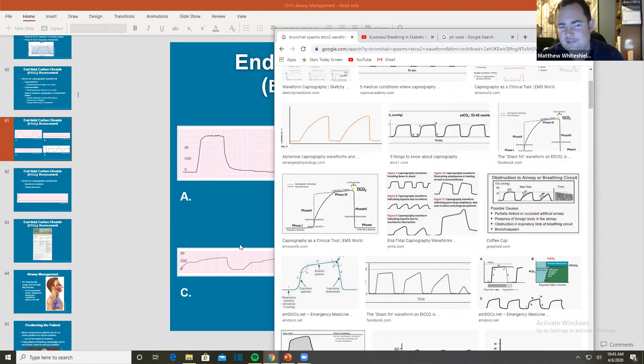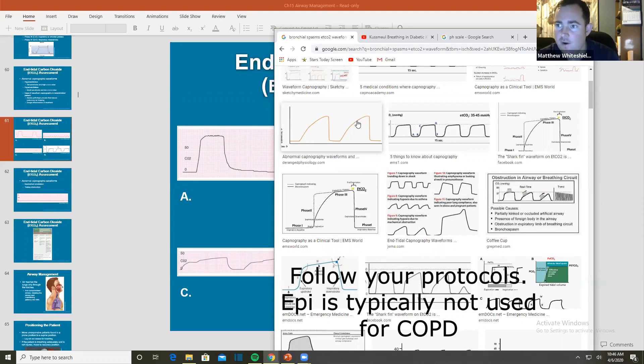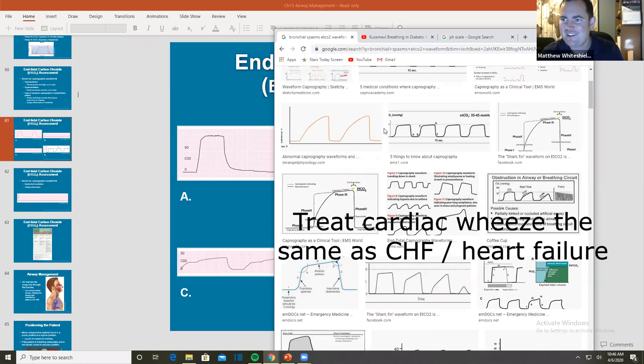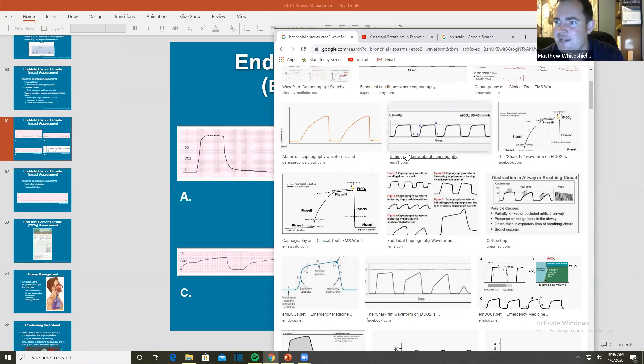I'm telling you now, use your waveform capnography to make those decisions. I call it shark finning. That is associated with lower airway obstruction, wheezing, asthma, anaphylaxis, COPD. Has nothing to do with cardiac. If I see shark finning, I treat with a bronchodilator. So I'm giving this patient albuterol, atrovent, solumedrol, mag sulfate, epinephrine. That's when I see shark finning. If I do not see that, but I hear wheezing and my patient has history of heart issues, I'm not treating them for asthma. That's a completely different ball game. But if you don't understand how to read your end-tidal capnography, you're going to miss it every single time.